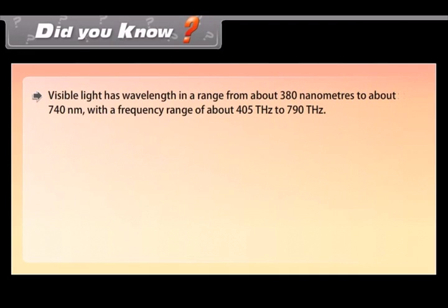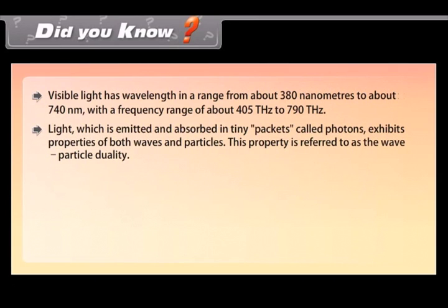Did you know? Visible light has wavelength in a range from about 380 nanometers to about 740 nanometers, with a frequency range of about 405 terahertz to 790 terahertz. Light which is emitted and absorbed in tiny packets called photons exhibits properties of both waves and particles. This property is referred to as the wave-particle duality.